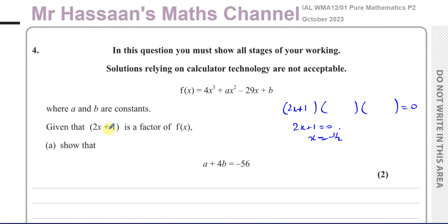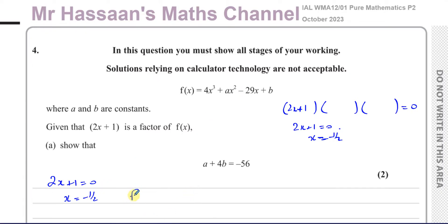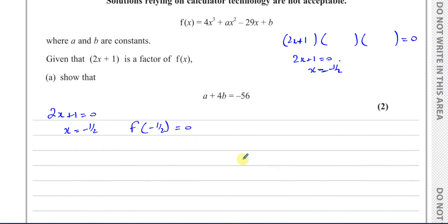Whenever you're given that a certain factor is a factor of an expression — like a cubic or quartic — you can say that whatever value makes that bracket 0, if it's a factor, then substituting it into the expression gives 0. That means x = -1/2 is a root, so we know for sure that f(-1/2) = 0, and from that we should be able to show the required equation is true.